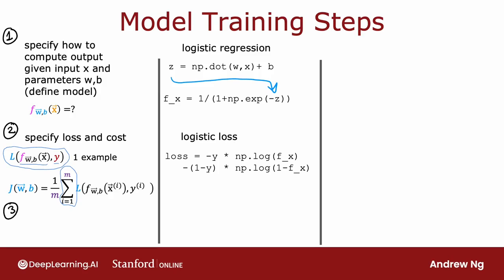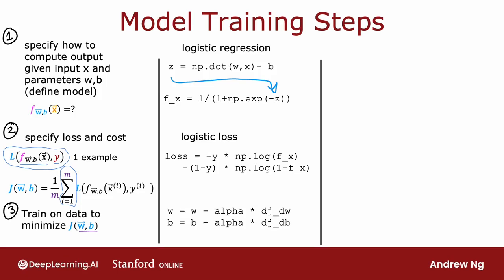The third and final step to train logistic regression was to use gradient descent to minimize that cost function j of w, b. Here, w is updated as w minus the learning rate alpha times the derivative of j with respect to w, and b is updated as b minus the learning rate alpha times the derivative of j with respect to b. So with these three steps — specifying output computation, specifying loss and cost, and minimizing the cost — we trained logistic regression.